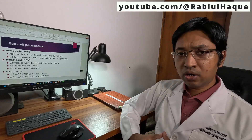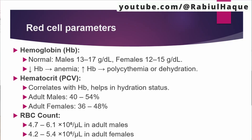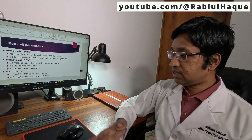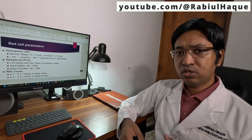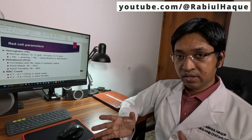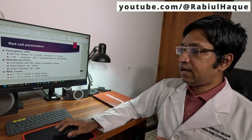Regarding packed cell volume or PCV, in adult males it is between 40 to 54%, and in adult females it is between 36 to 48%. Regarding the RBC or red blood cell count, in adult males it is about 4.7 to 6.1 million per microliter, and in adult females it is between 4.2 and 5.4 million per microliter. In polycythemia, the count will be higher, and in polycythemia vera, there will also be some mutation.